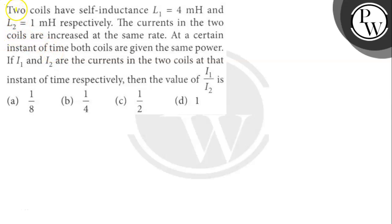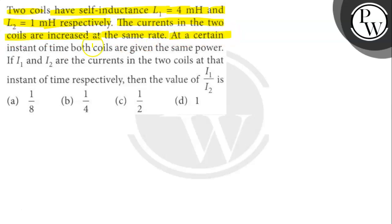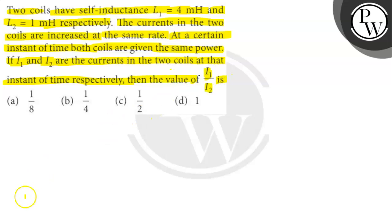Let's read the question. Two coils have a self-inductance L1 equal to 4 mH and L2 equal to 1 mH respectively. The currents in the two coils are increased at the same rate. At a certain instant of time both coils are given the same power. If I1 and I2 are the currents in the two coils at that instant of time respectively, then the value of I1 divided by I2 is to be found.